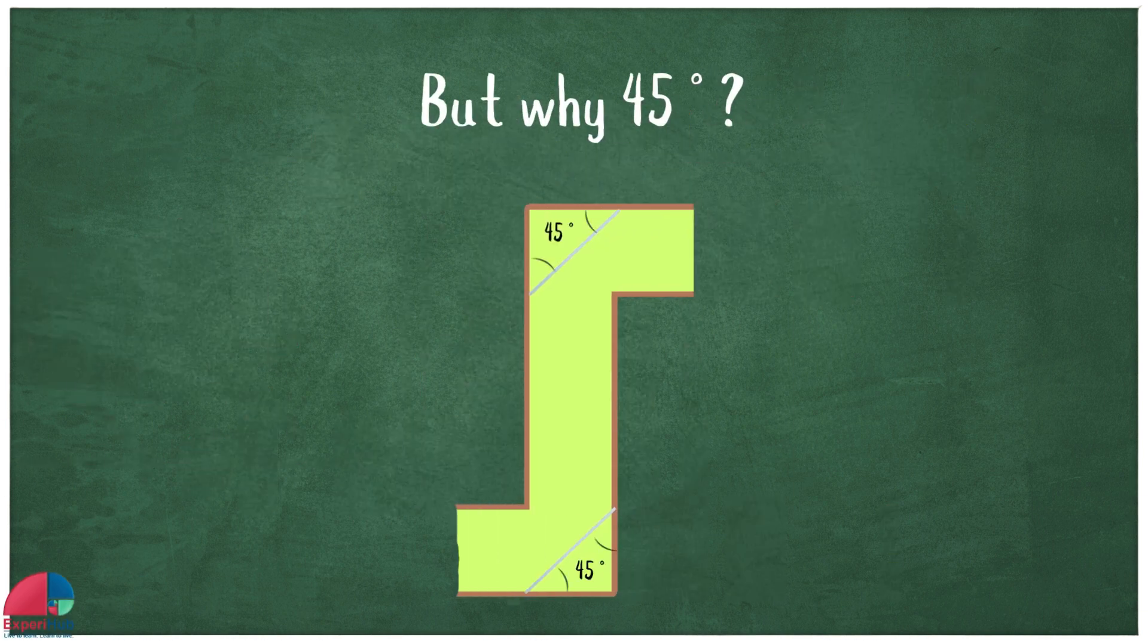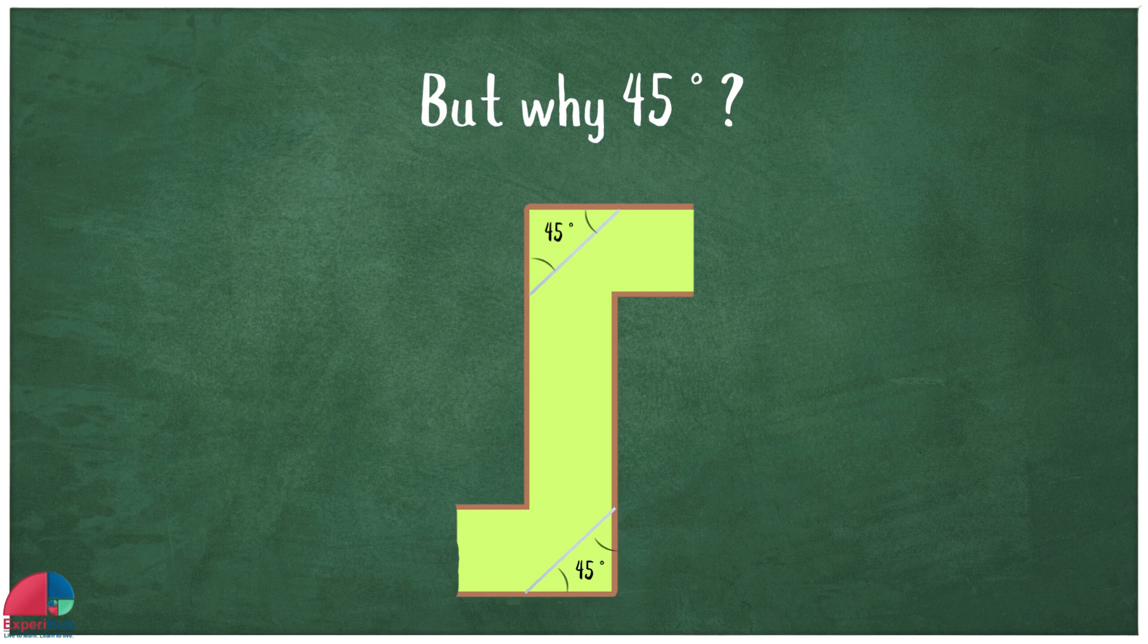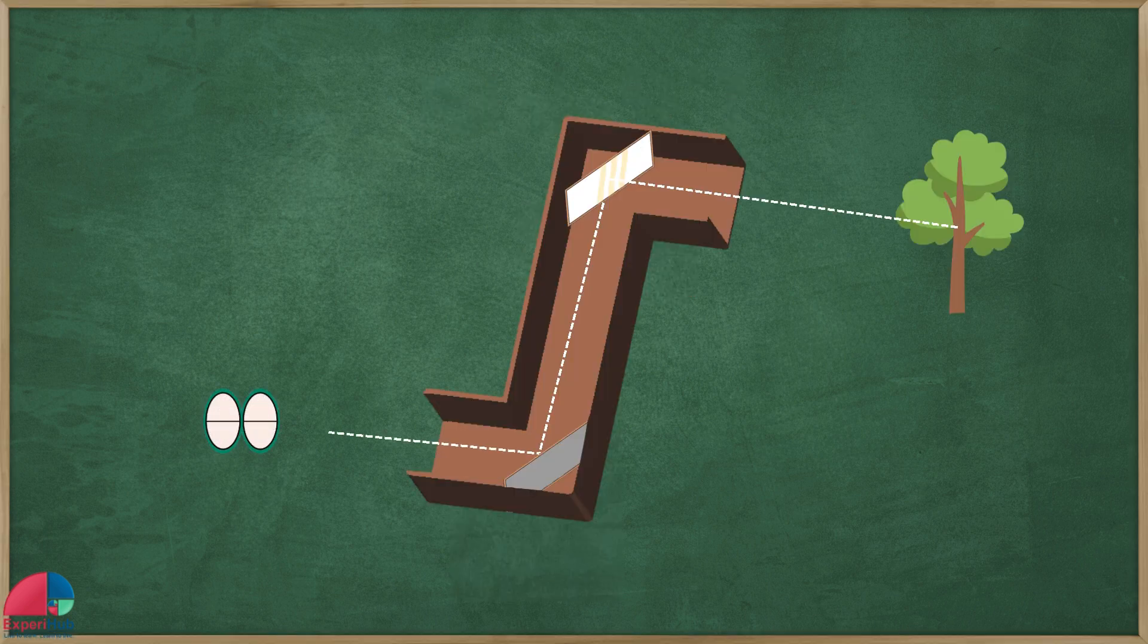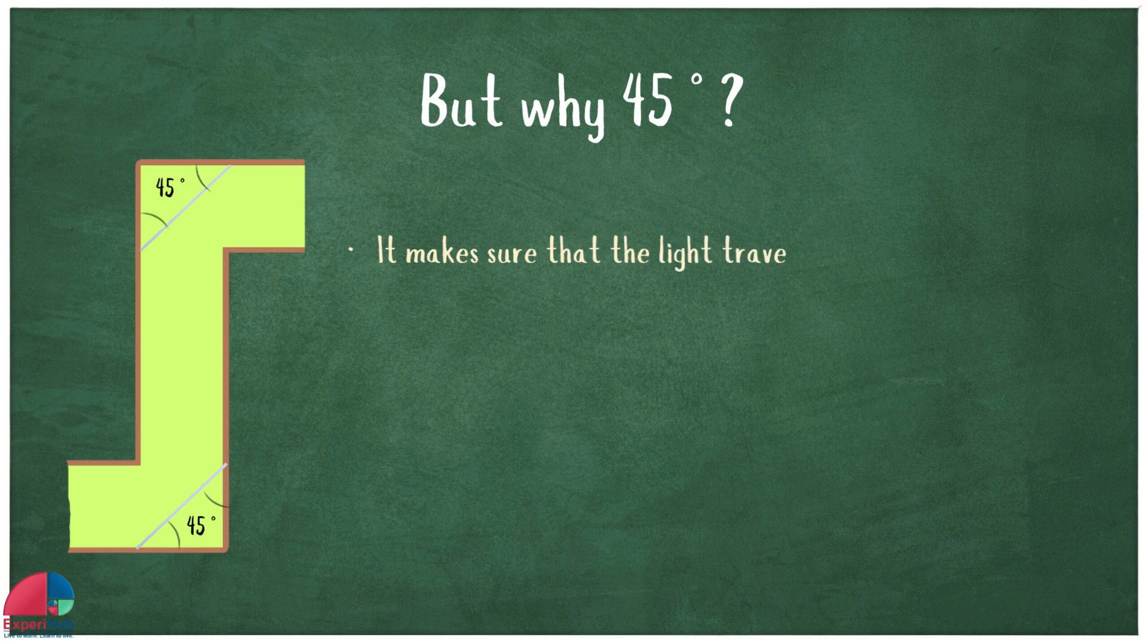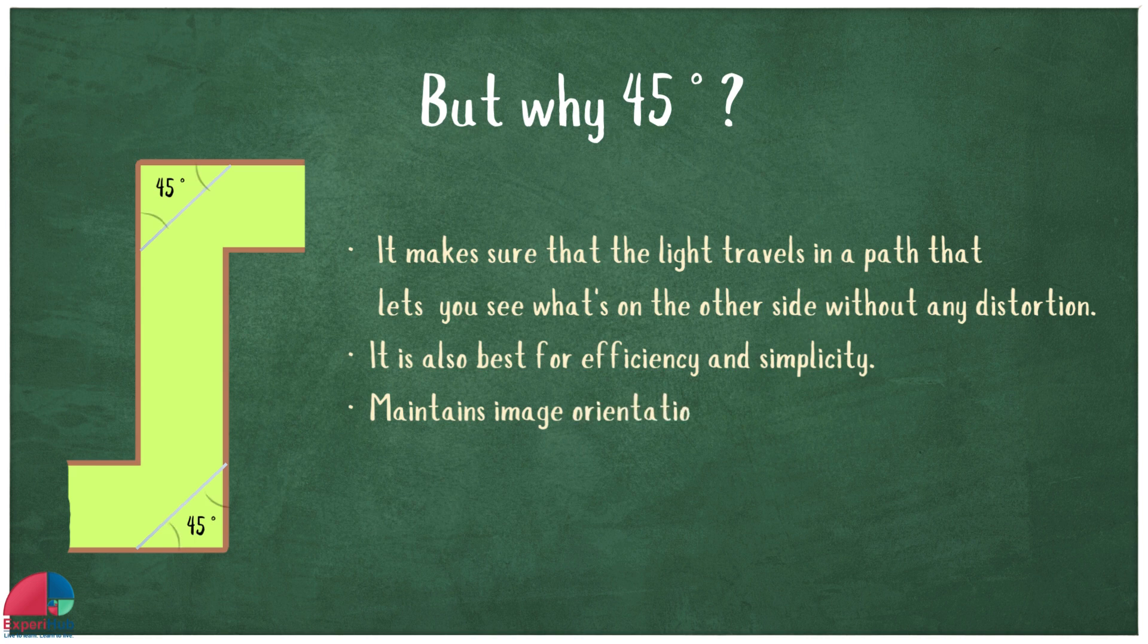This 45 degree angle is really important. It makes sure that the light travels in a path that lets you see what's on the other side without any distortion. It is also best for efficiency and simplicity, maintains image orientation correctly, ensures consistent light reflection angles, and maximizes visibility from hidden positions.